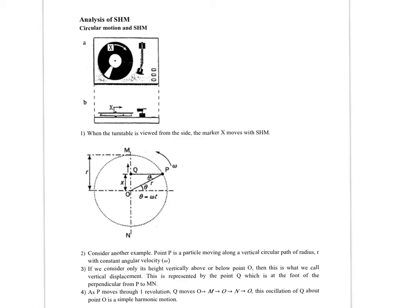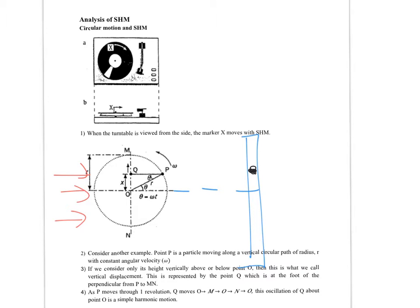How is SHM related to circular motion? Imagine a turntable with a pen stuck on it. As the pen goes round and round, if you shine a light from the side and project the shadow on a screen, the shadow undergoes simple harmonic motion. As the pen completes one revolution, the shadow completes one full oscillation.